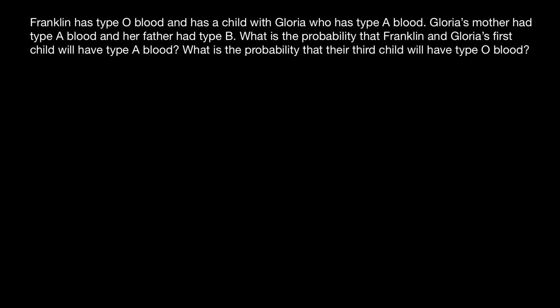So let's analyze this problem. We have Franklin with blood group O and we have Gloria with blood type A. So Franklin here and Gloria. And what we know is that Franklin has blood type O and Gloria has blood type A. And we have to find probability for the children, unspecified sex. Sex doesn't matter in this type of problem.